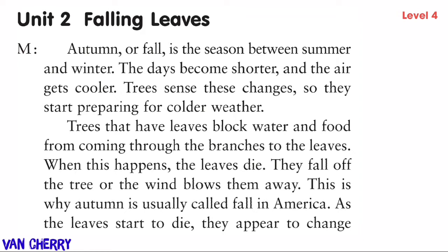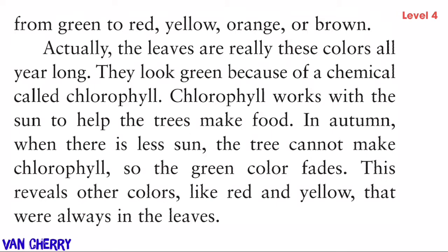When this happens, the leaves die. They fall off the tree or the wind blows them away — this is why autumn is usually called fall in America. As the leaves start to die, they appear to change from green to red, yellow, orange, or brown.